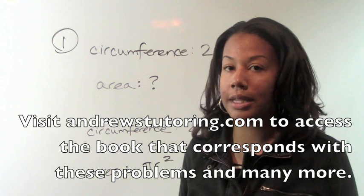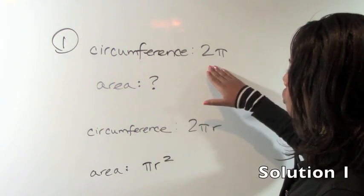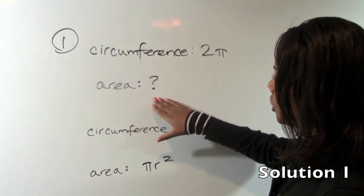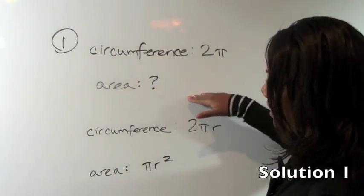Okay, we're going to get started with number one. Number one says that if the circumference of a circle is 2π, what is the area? This question is kind of like an if-then question. You know that if this is true, then what is this?